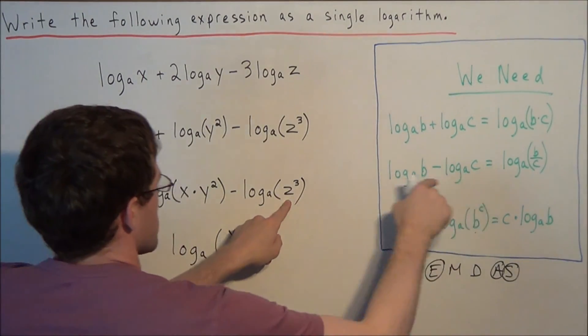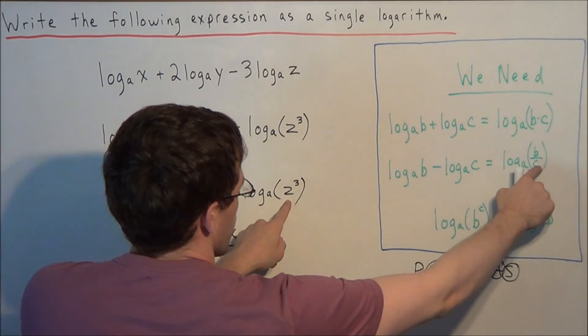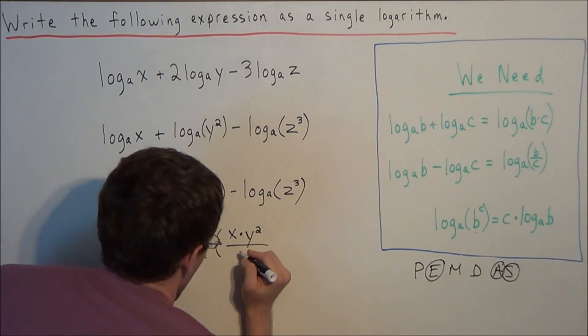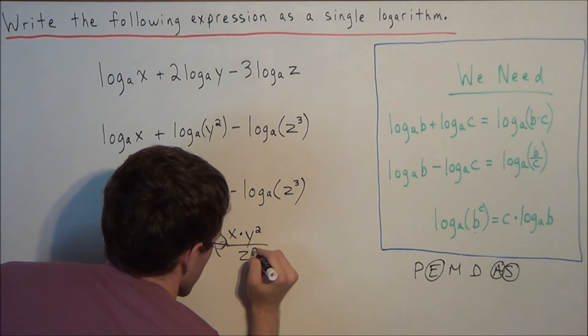Notice how this term being subtracted, the inner term is a c, and it winds up in the denominator. So we have z to the third.